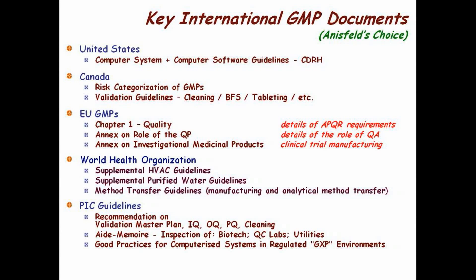Europe. Chapter one of the European GMPs on quality gives you 13 things you have to look at in your annual product quality review. FDA has never actually spelled out what you have to look at in APQRs. In America it's PQR — product quality review. In Europe it's the annual product review. I just merged the terms together to give you APQR. Read those 13 items and incorporate them into your American system, both for drugs and for APIs, and you'll be fine.